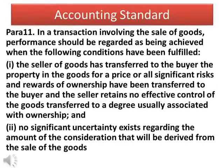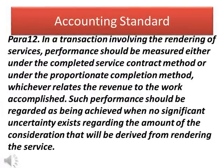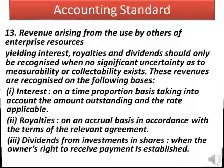Para 11: In a transaction involving the sale of goods, performance should be regarded as being achieved when the following conditions have been fulfilled: the seller has transferred to the buyer the property in the goods for a price where all significant risks and rewards of ownership have been transferred to the buyer and the seller retains no effective control of the goods transferred to a degree usually associated with ownership; and no significant uncertainty exists regarding the amount of consideration that will be derived from the sale of goods. Para 12: In a transaction involving the rendering of services, performance should be measured either under the completed service contract method or under the proportionate completion method, whichever relates the revenue to the work accomplished. Such performance should be regarded as being achieved when no significant uncertainty exists regarding the amount of consideration that will be derived from rendering the service.